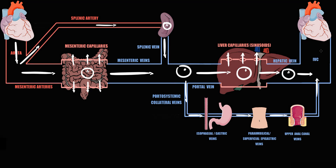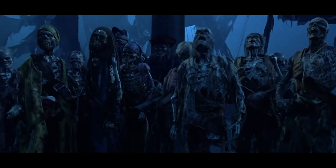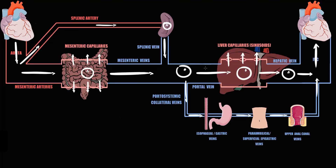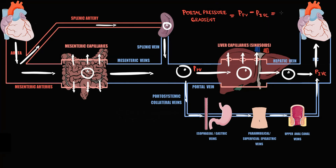From the inferior vena cava, blood goes into the right atrium and right ventricle of the heart. Blood then crosses pulmonary circulation and goes into the left atrium and left ventricle, and from the left ventricle the heart pushes blood into the aorta again — so this cycle repeats. Portal pressure gradient is basically the pressure within the portal vein minus the pressure within the inferior vena cava, and the result should be less than 5.